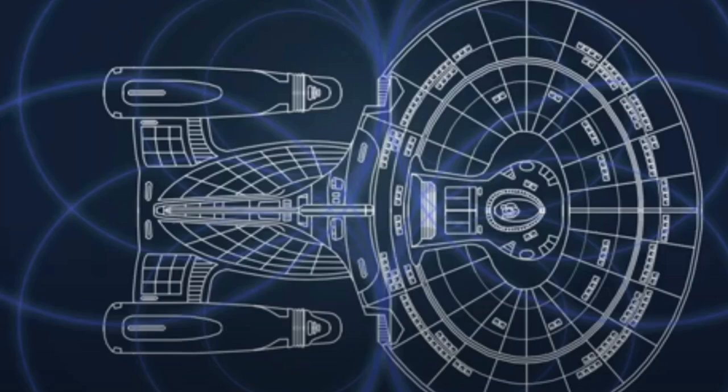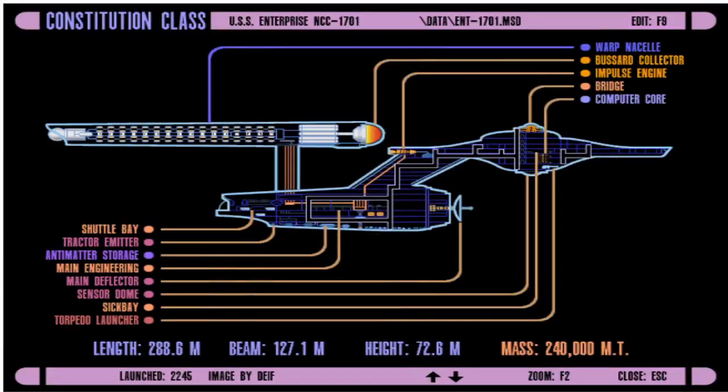Now that we understand the impulse engine, here you can see this is another neat view. The impulse engine here is visible, and the exhaust would come out here. The field somehow is getting generated from right here and it envelops the ship, manipulating its mass.